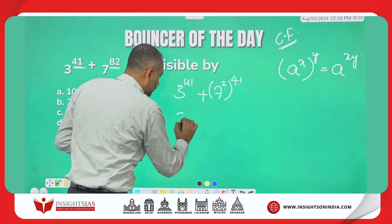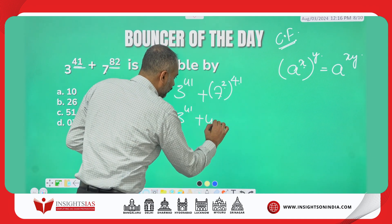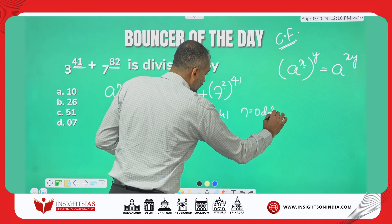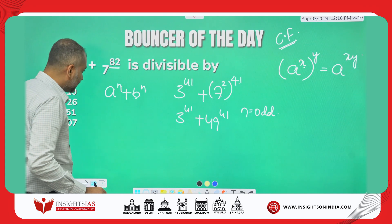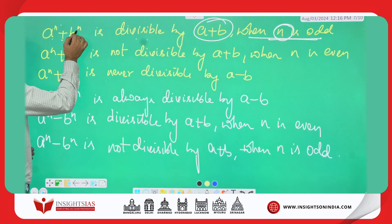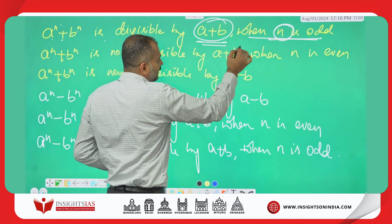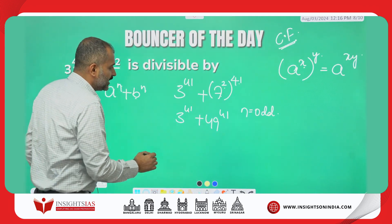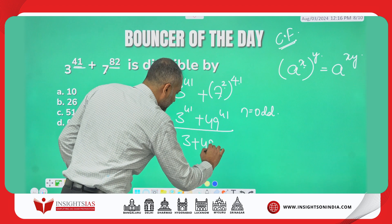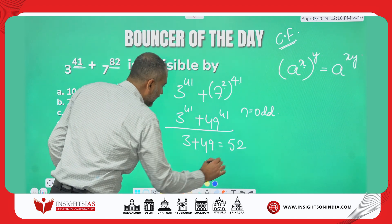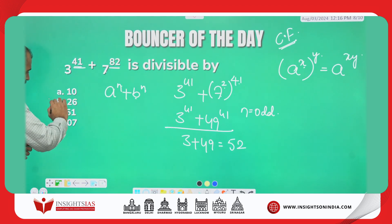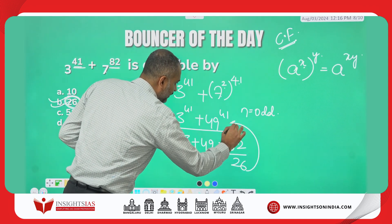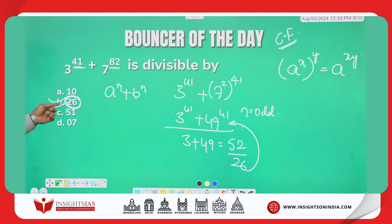Now it is in the form of 3^41 + 49^41, where n = 41 is odd. Remember the rule: a^n + b^n is divisible by (a + b) when n is odd. Since n is odd, this expression is divisible by 3 + 49 = 52. Any number divisible by 52 is also divisible by 26. So the answer is 26.